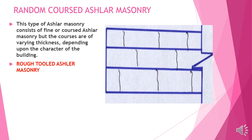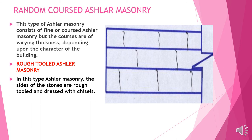Rough tooled Aslar masonry: in this type, the faces of the stones are rough tooled and dressed with chisels. The thickness of joints does not exceed a quarter inch.